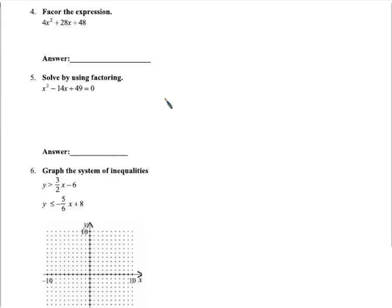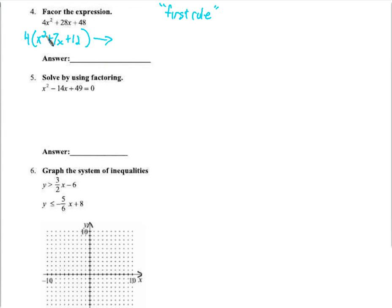I'm going to factor this expression. The first rule of factoring any polynomial is to find a common factor among all terms. All of these have a factor of 4 in them, so we take the 4 out. We're left with 4 times the quantity x squared plus 7x plus 12. Now we just factor this part — we need two parentheses that multiply together and give us this back.